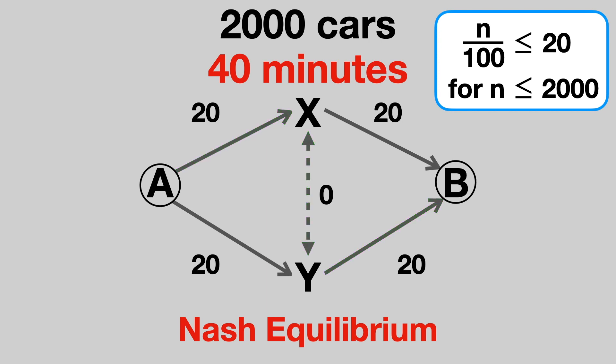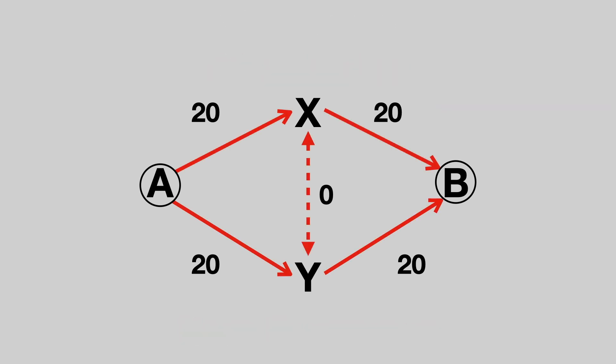The new road has actually made journeys longer. Notice that people can't now switch back to a 30-minute route. Every possible route now takes 40 minutes, because there is increased congestion on our country roads. This is the Braess Paradox.